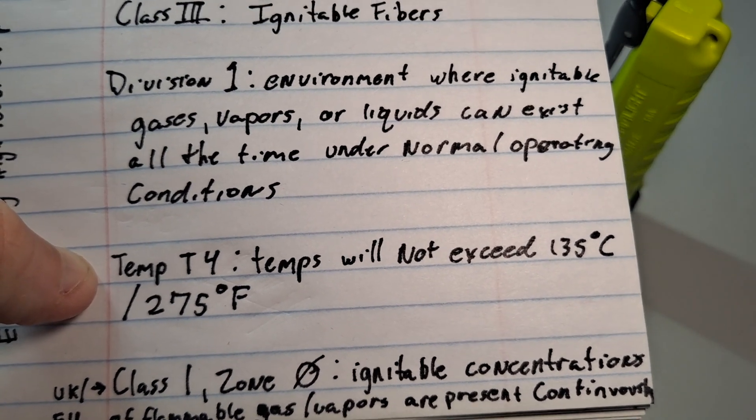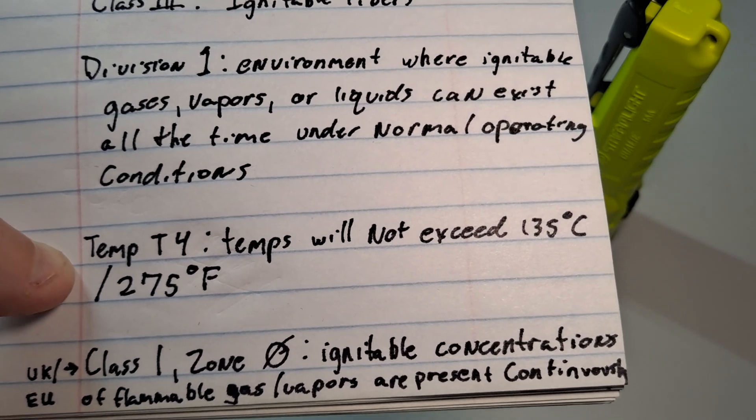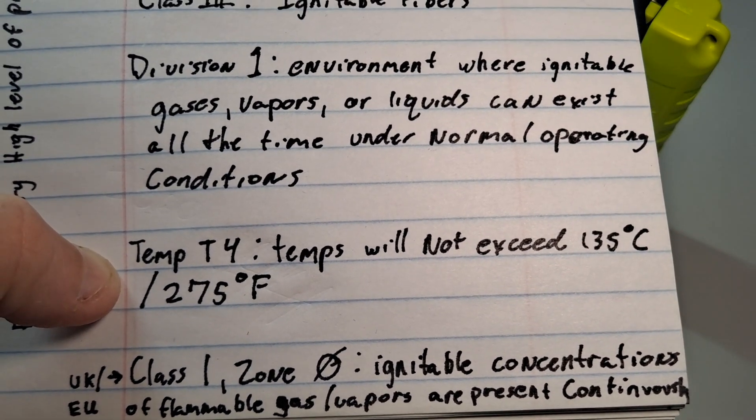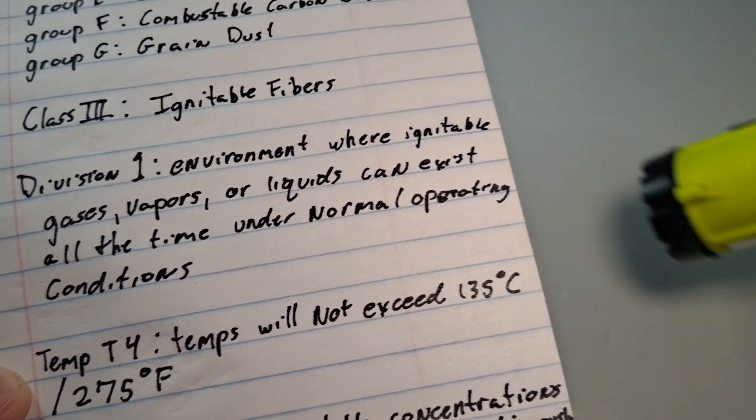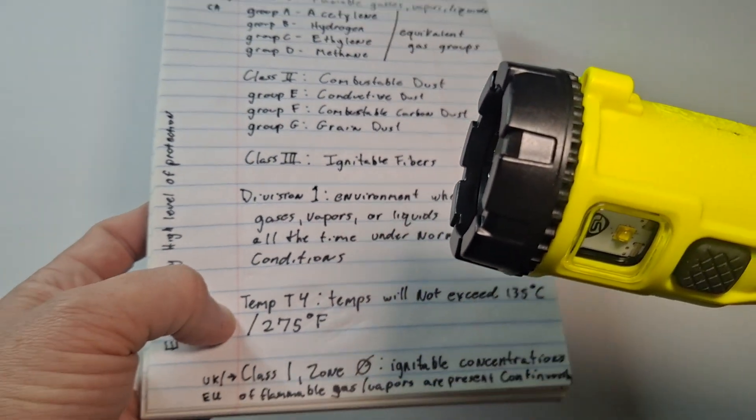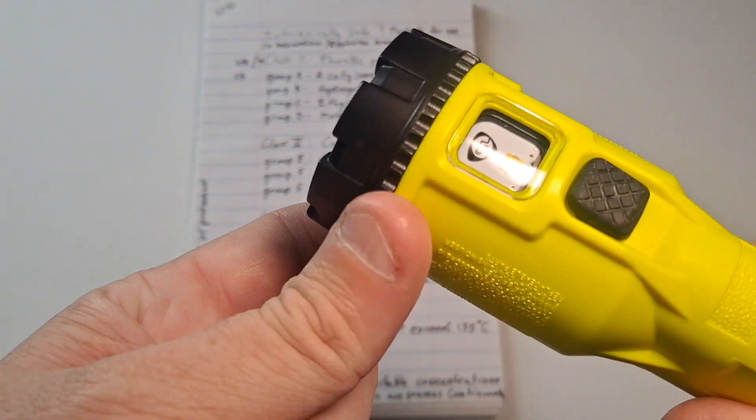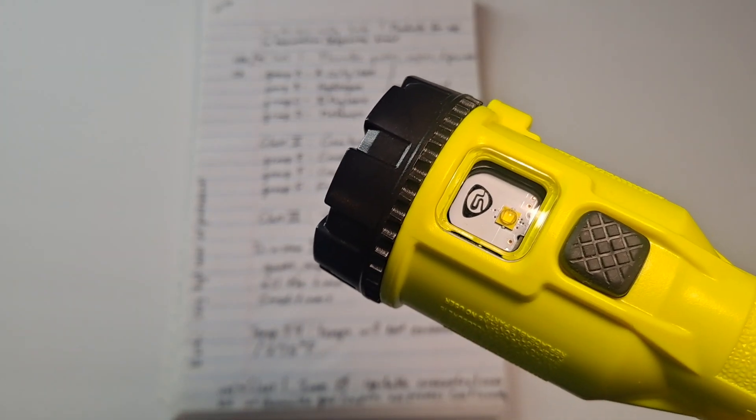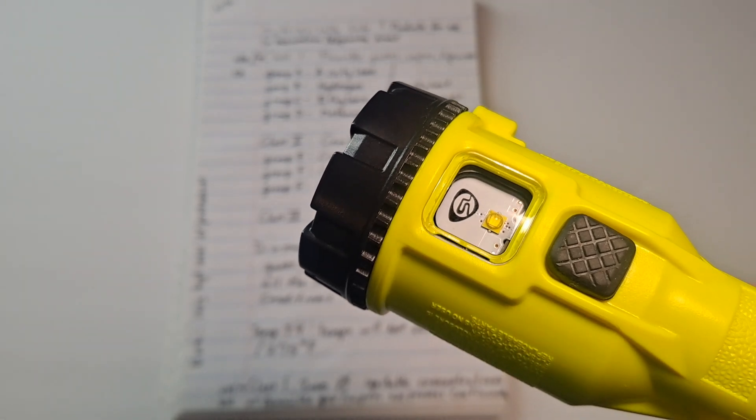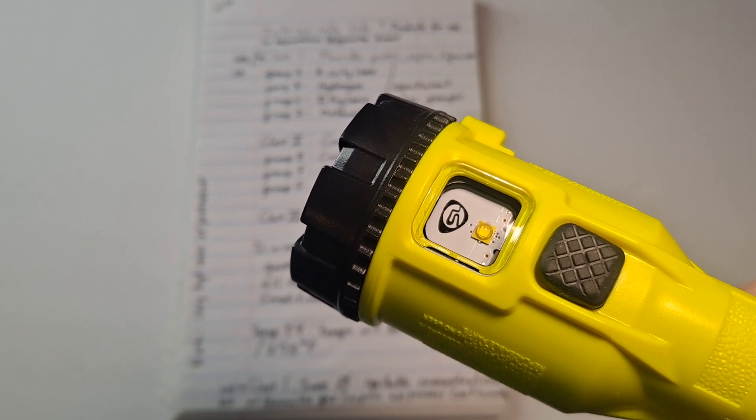Now temperature T4. The temperature T4 code regards to temperatures will not exceed 135 degrees centigrade or 275 degrees Fahrenheit. So what is that about? Well, the reason why this is low lumens, even though they're LEDs, is because a typical LED flashlight gets hot. It usually gets hot right around the ring, wherever the heat sink is on the inside. This is only rated to less than 135 degrees centigrade or 275 Fahrenheit. So this in itself should be low enough not to cause a fire.